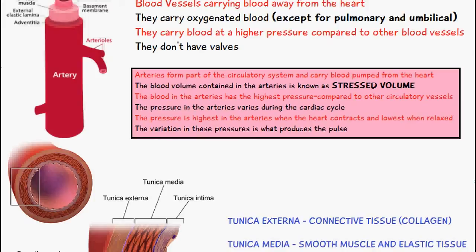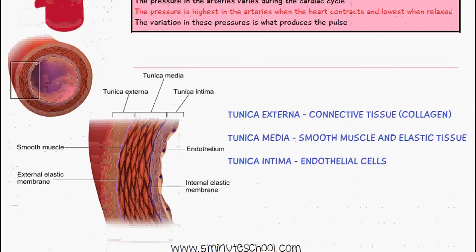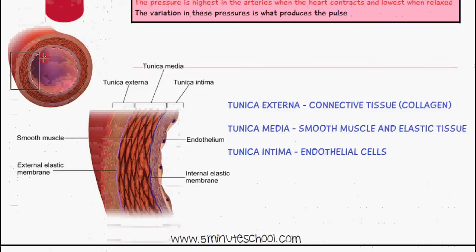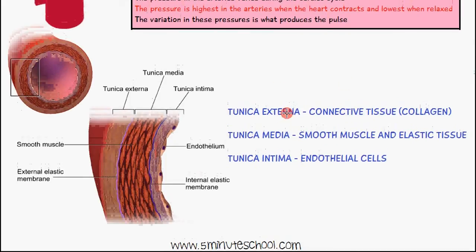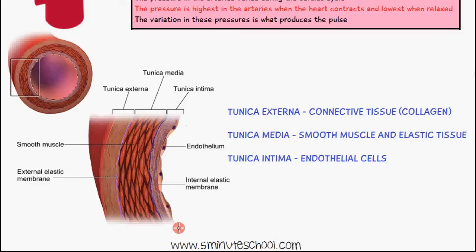Now let's look at the structure of arteries. I've included a diagram showing the cross section. The central part is called the lumen, which is where the blood flows through, and we have three separate layers. The tunica externa consists of connective tissue or collagen fibers. The tunica media consists of smooth muscle and elastic tissue. The tunica intima consists of endothelial cells and is in contact with the blood.